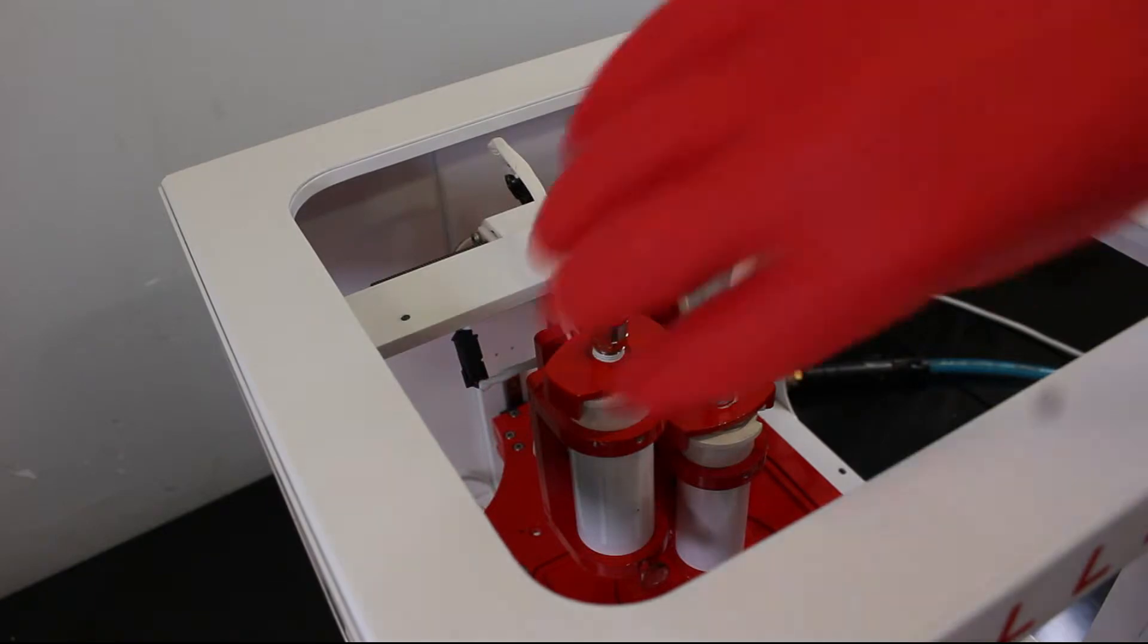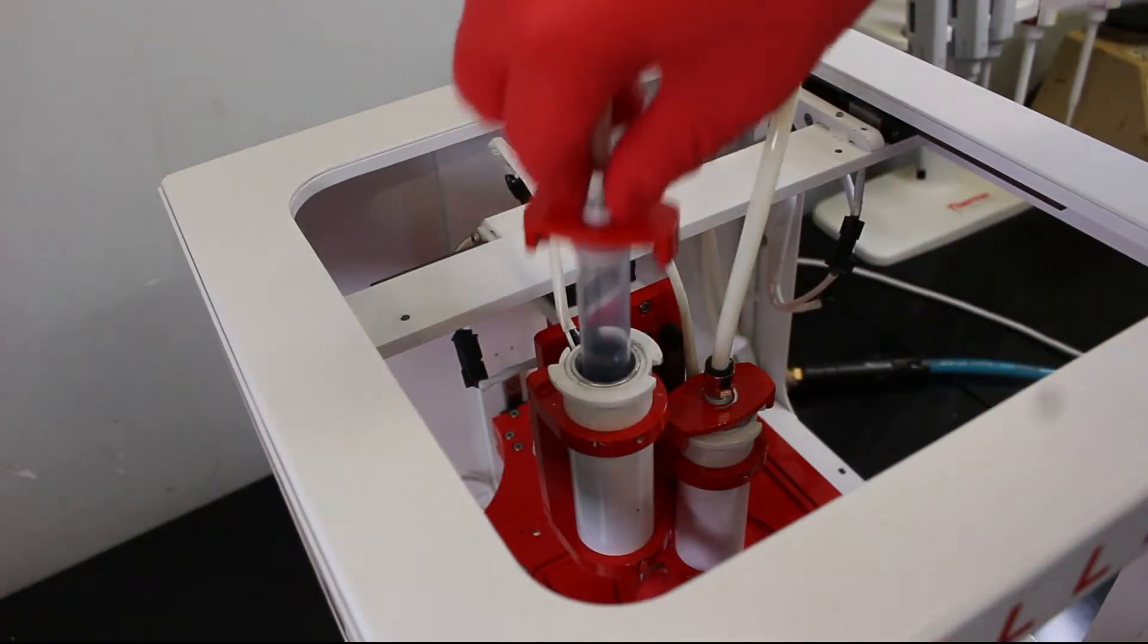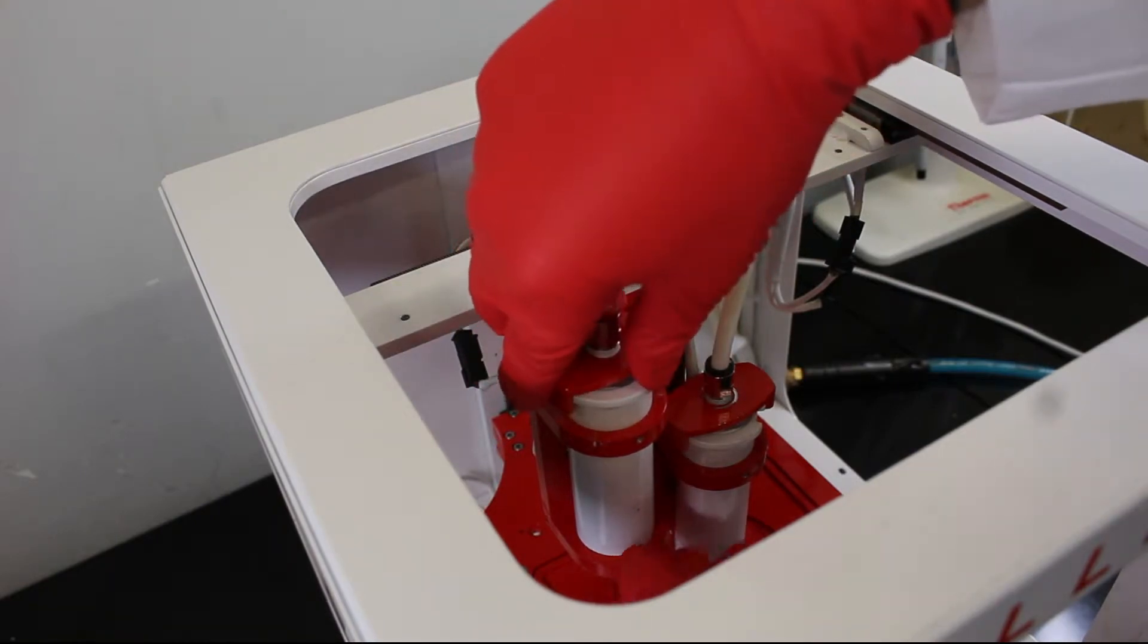Next, attach the syringe to the hose, insert it into the canister, and twist it into the locked position. Then, tighten the screw below to secure it.